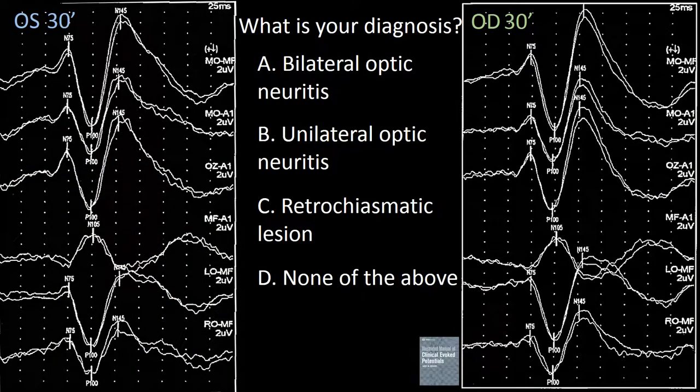The first question: What is your diagnosis? A. Bilateral optic neuritis. B. Unilateral optic neuritis. C. Retrochiasmatic lesion. D. None of the above.